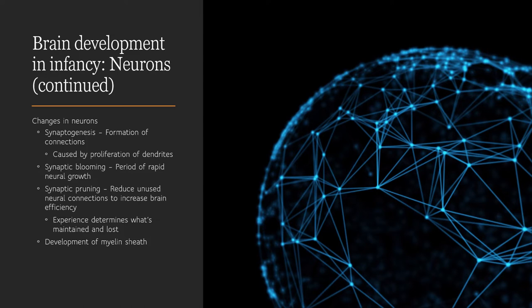Babies are born with relatively few myelinated axons, which is one reason infants can't see well and can't do much with their hands beyond grasping and batting at objects. As children get older, different areas of the brain become myelinated on a genetically determined timetable, and these periods of myelination represent critical periods for learning.